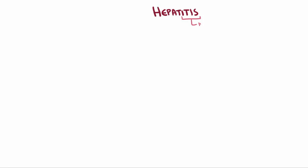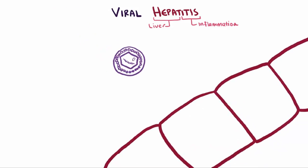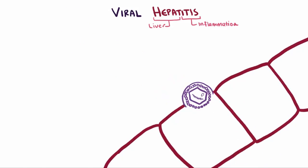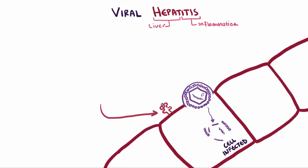Hepatitis, meaning inflammation of the liver, most commonly comes about because of a virus. These viruses tend to target the cells in the liver, and when they get in and infect these cells, they cause them to present weird and abnormal proteins via their MHC class 1 molecules.